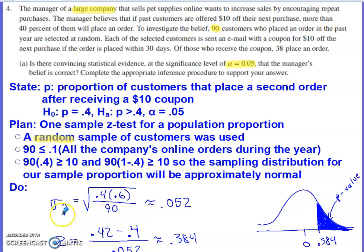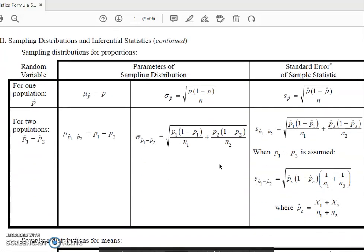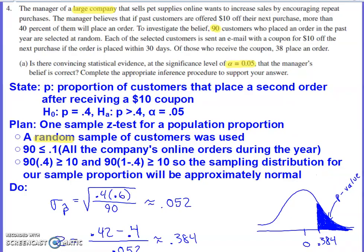We use a calculation from the formula sheet. The sampling distribution section is on the second page. We're finding the standard deviation for the sampling distribution of our sample proportion. We're assuming the null hypothesis is true throughout the work, which is always the case in any significance test until we develop evidence otherwise. Using this formula, the standard deviation for our sampling distribution ends up being 0.052.